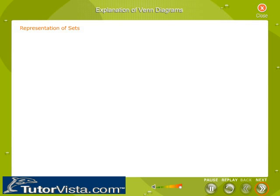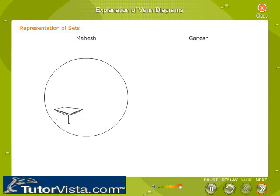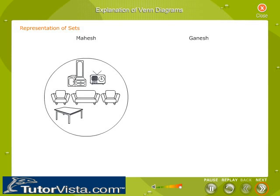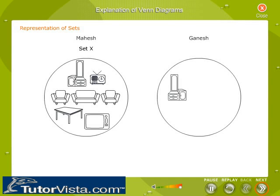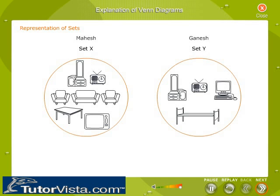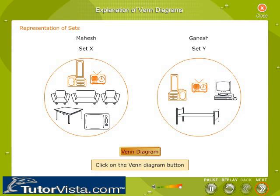Let us consider the objects owned by two friends, Mahesh and Ganesh. Mahesh has a dining table, a dressing table, a sofa set, a radio, a cot, and a computer, represented by set Y. Sets X and Y have the dressing table and the radio in common. Click on the Venn diagram button to view the representation of the sets in a Venn diagram.